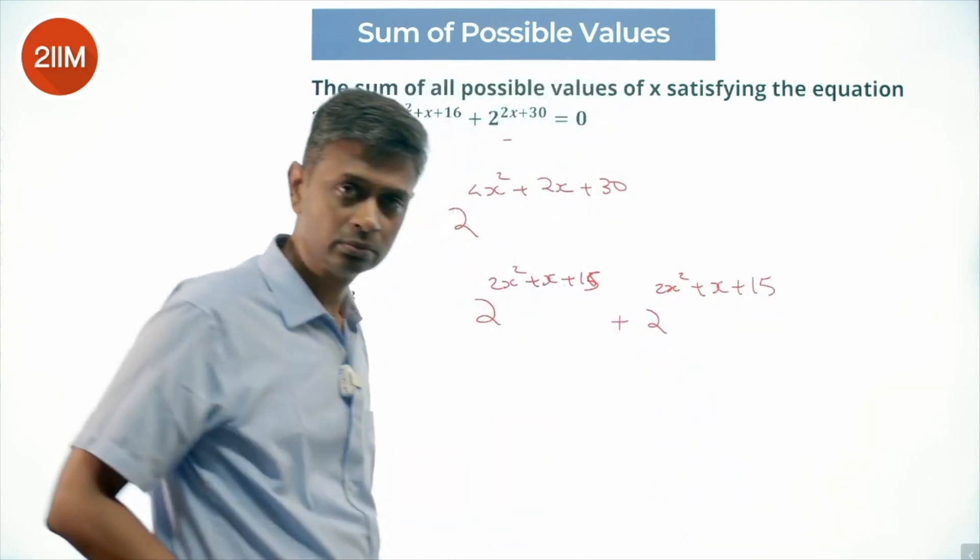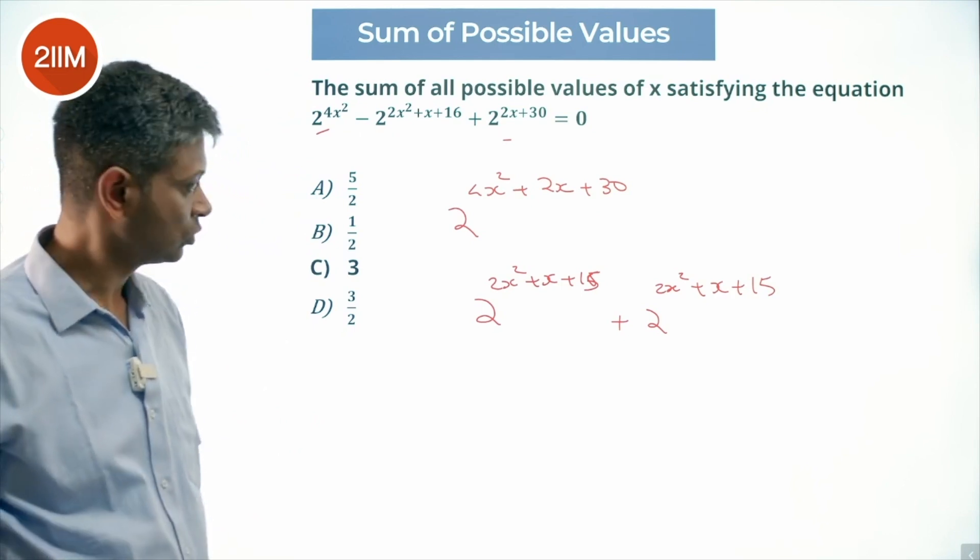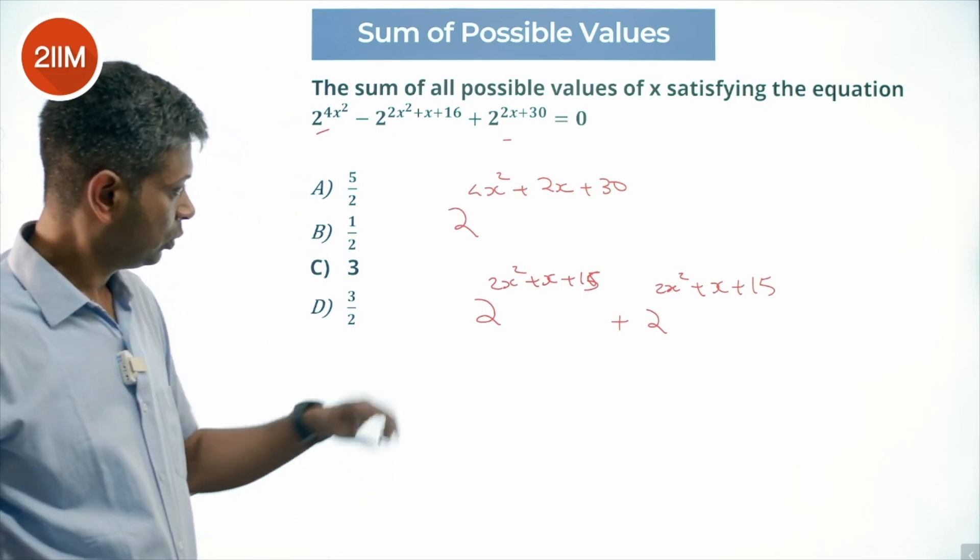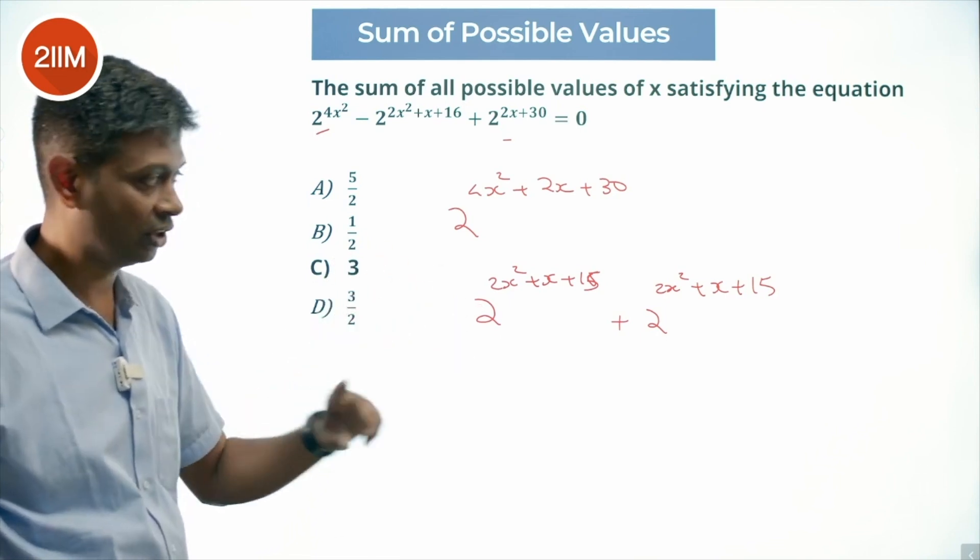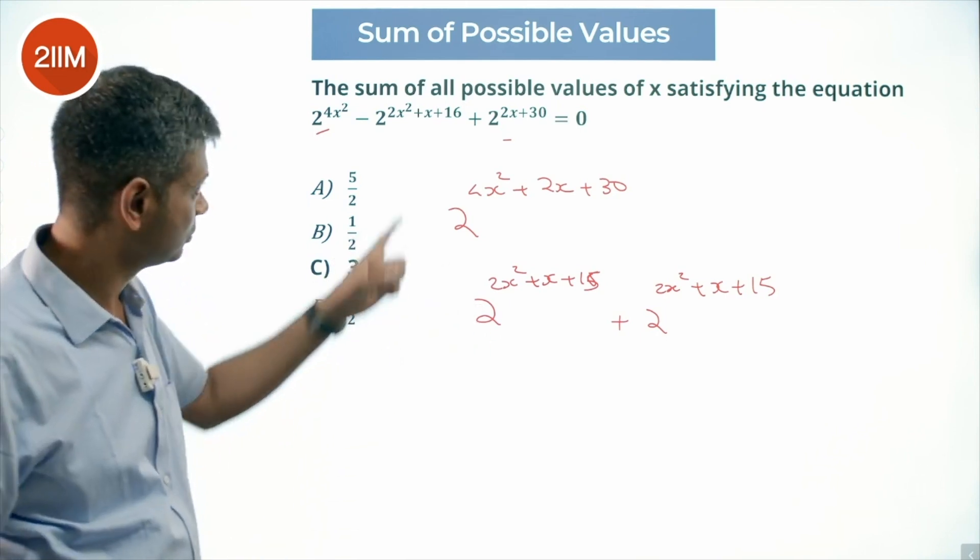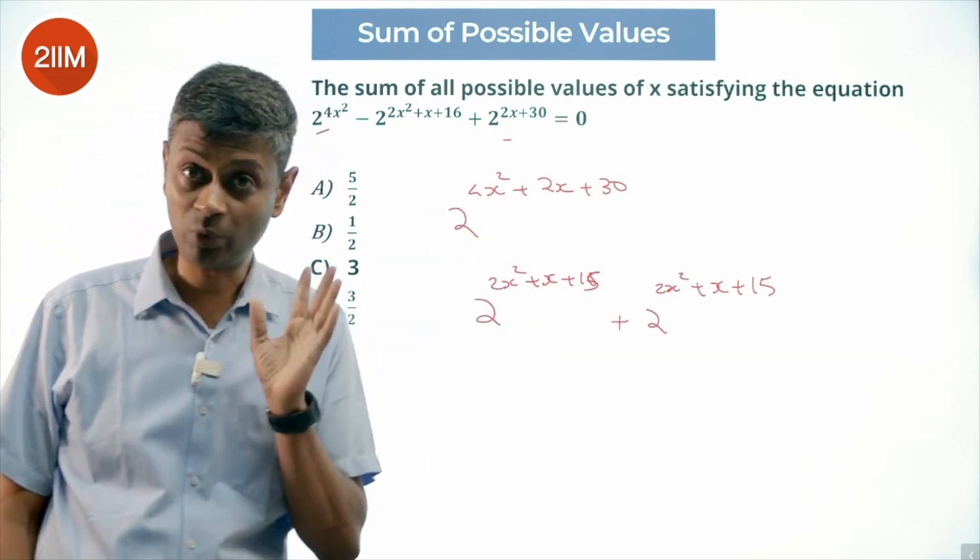If I add these two, 2x square plus x plus 15 plus 2x square plus x plus 15 is 4x square is 2x square plus x plus 16, this into 2, that will be this. If I multiply these two, I will get 4x square plus 2x plus 30. Yes, that works.